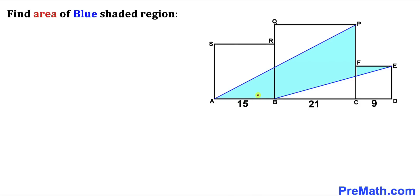Welcome to pre-math. In this video we have got a blue shaded region inscribed in three squares. The side length of the large square is 21 units, the side length of the medium square is 15, and the side length of the small square is 9 units. We are going to calculate the area of this blue shaded region.